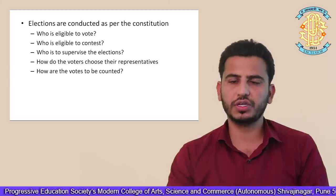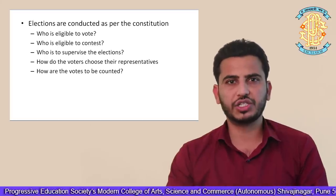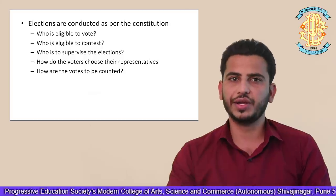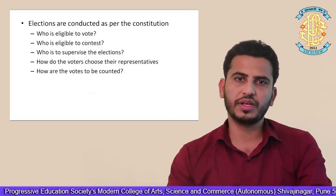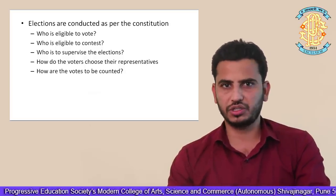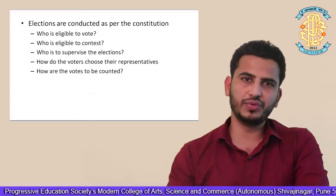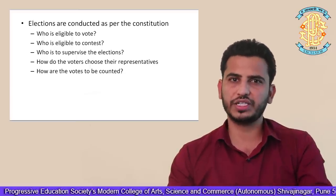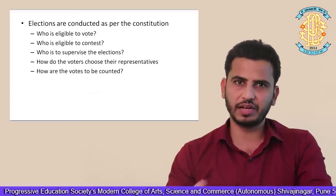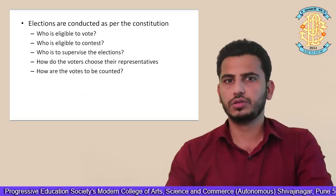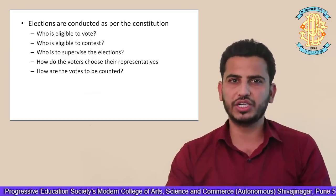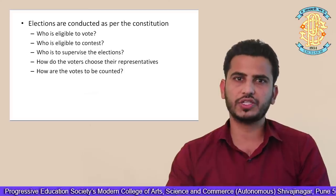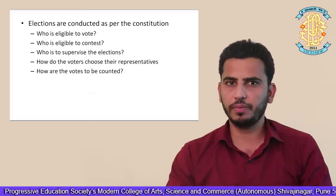As per the Constitution, we have our Election Commission of India, which has a Chief Election Commissioner and two Election Commissioners. We will discuss the structure of the Election Commission in detail later. In short, all the methods are already mentioned in the Constitution so as to implement the electoral process.